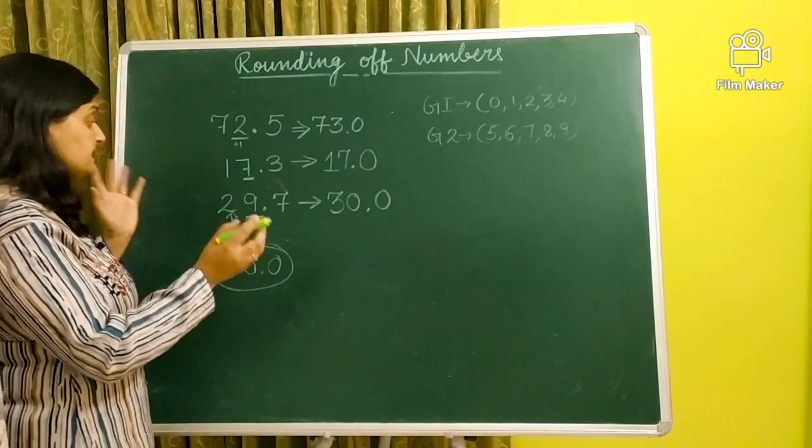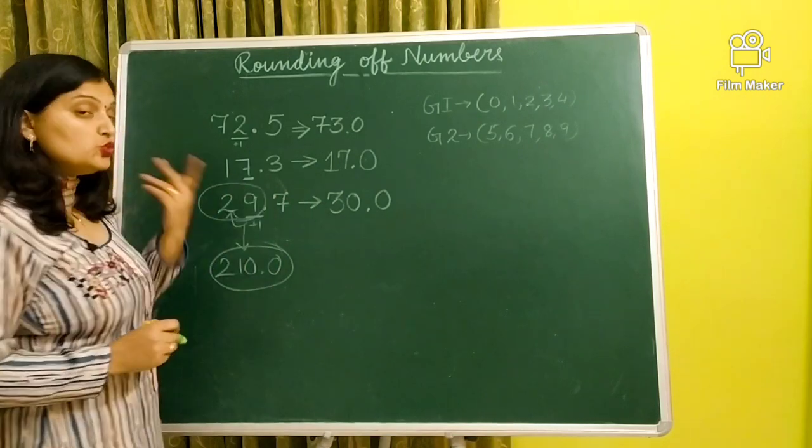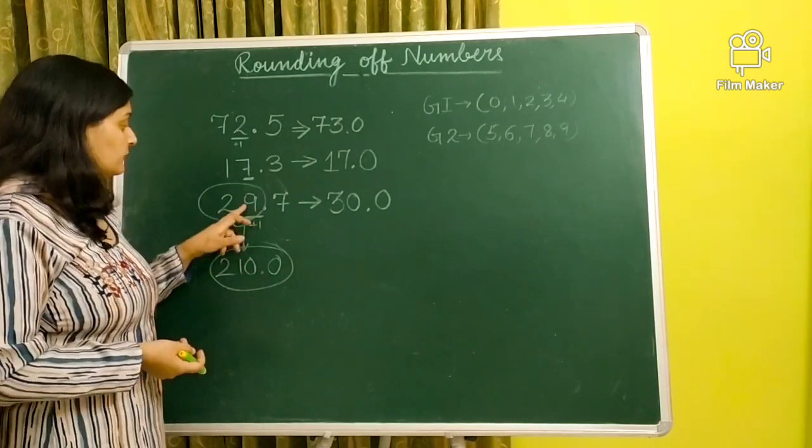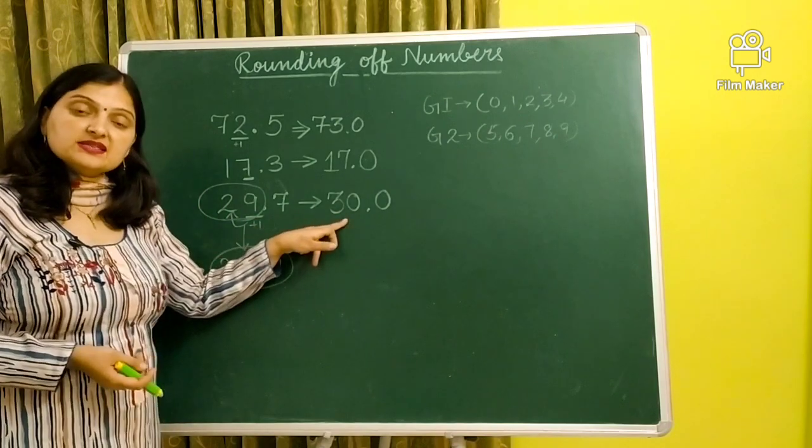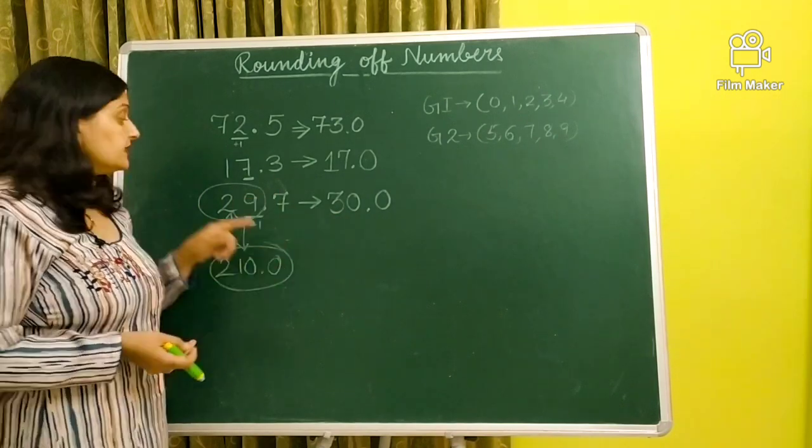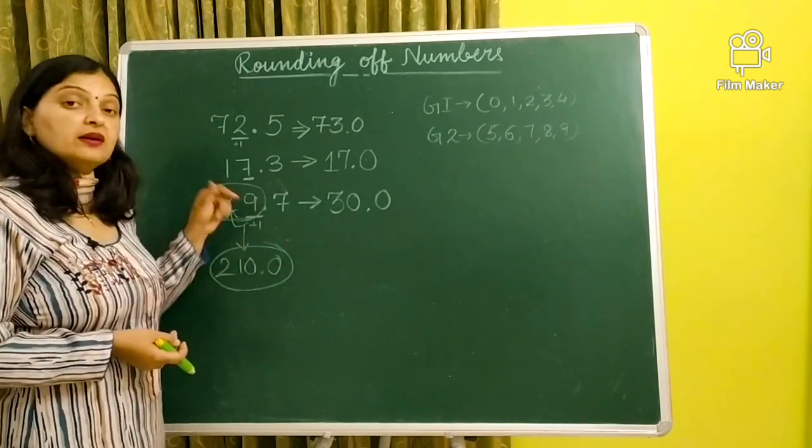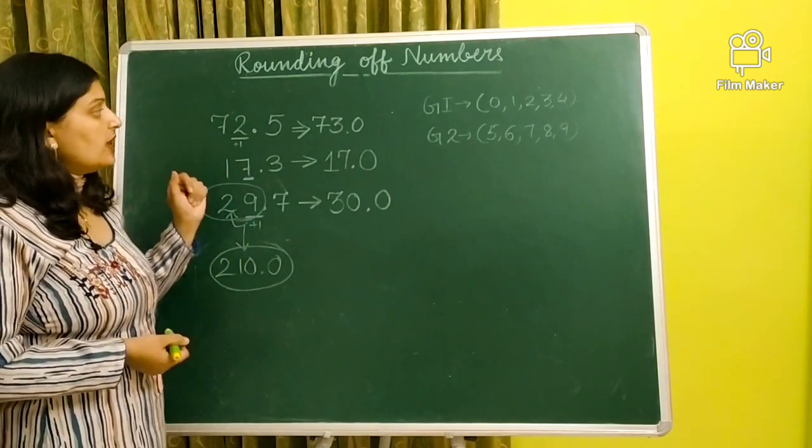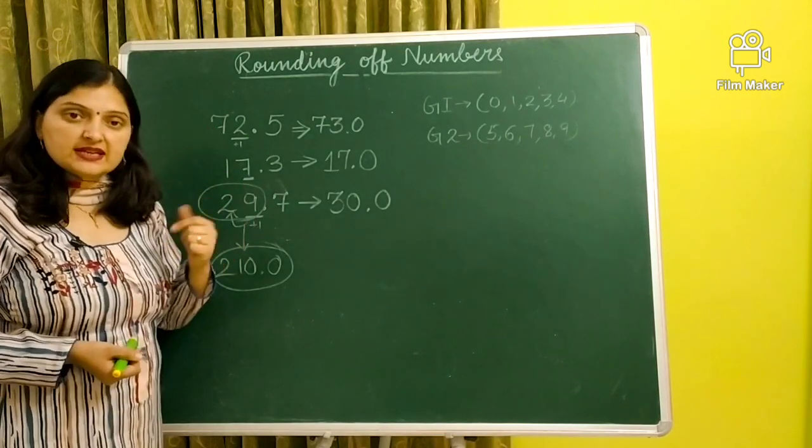Or we can say that basically, whatever number is on the left side, we add one to that. So if we add one to 29, what answer will we get? Thirty. If it was 299, then we add one to that. Okay? So this is the way to round numbers to nearest ones place.